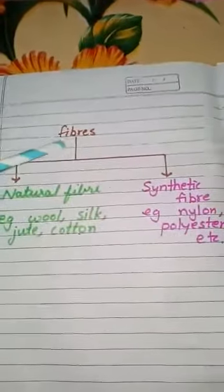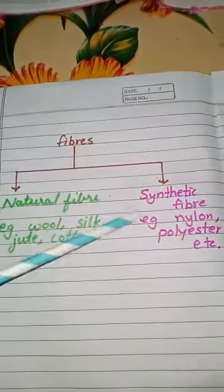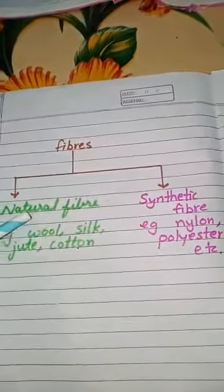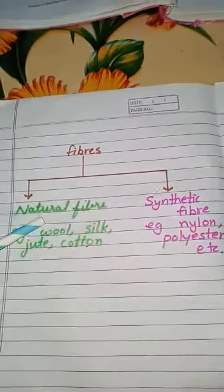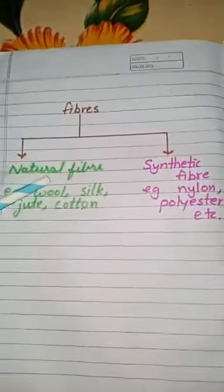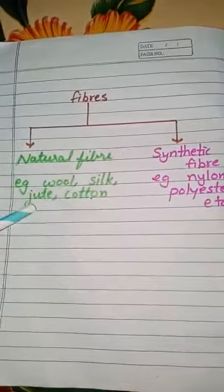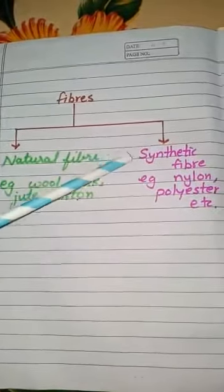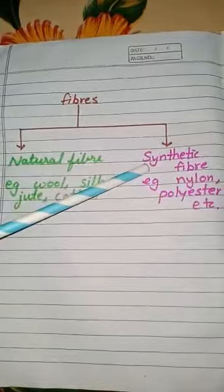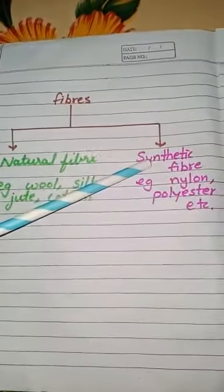In class 6 we have learned two types of fibers: natural fibers and synthetic fibers. Natural fibers are the fibers that are obtained from plants and animals — they are called natural fibers. Synthetic fibers are the fibers which are made by humans through chemical synthesis — they are called synthetic fibers.